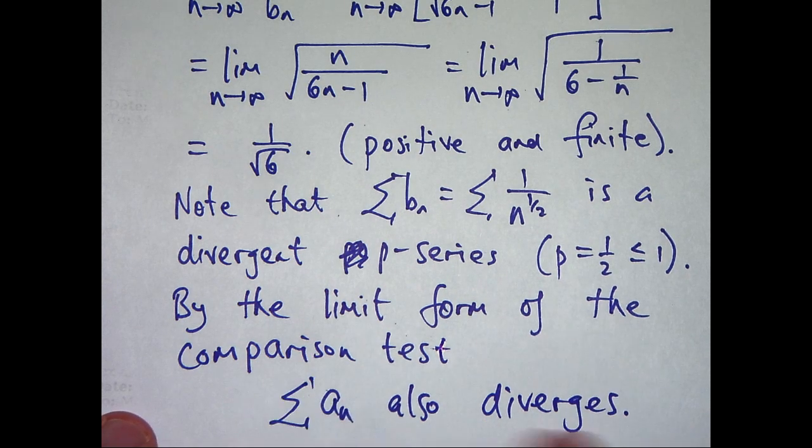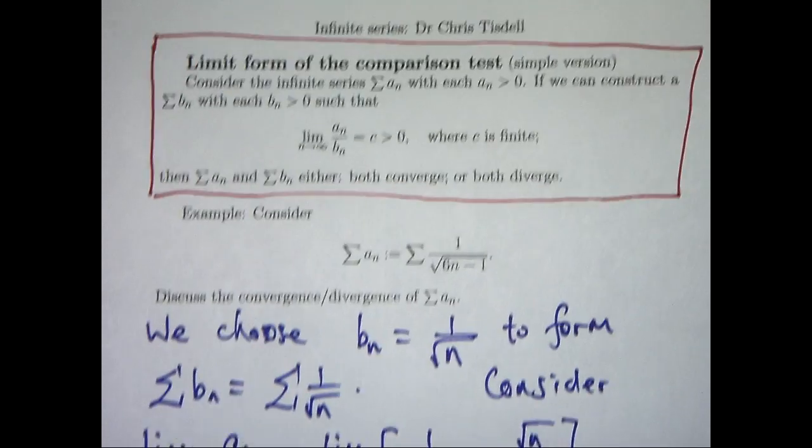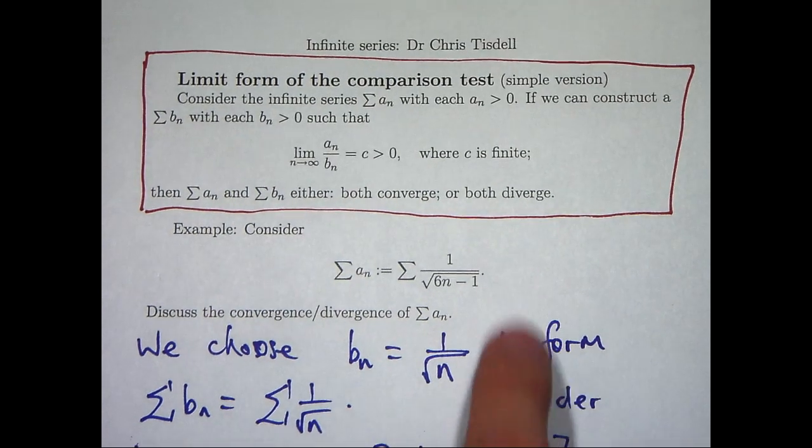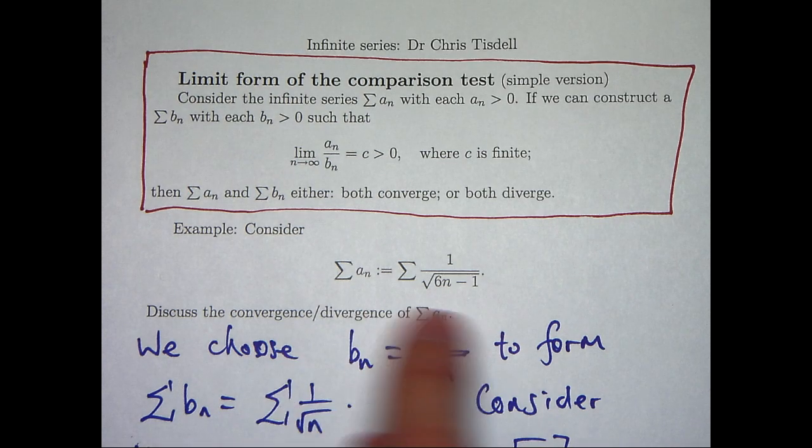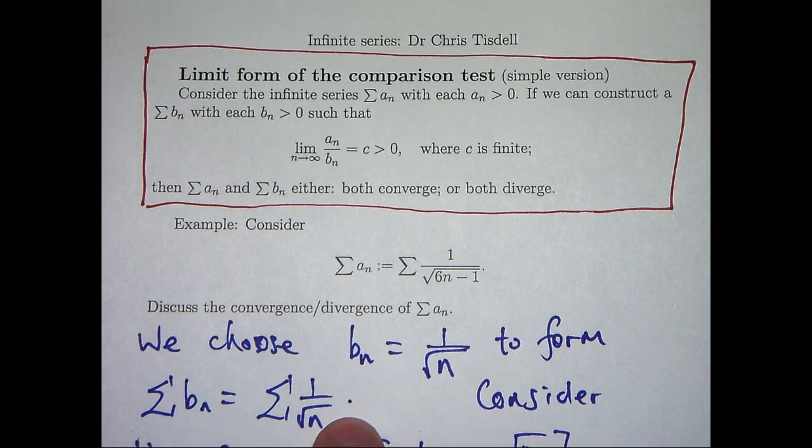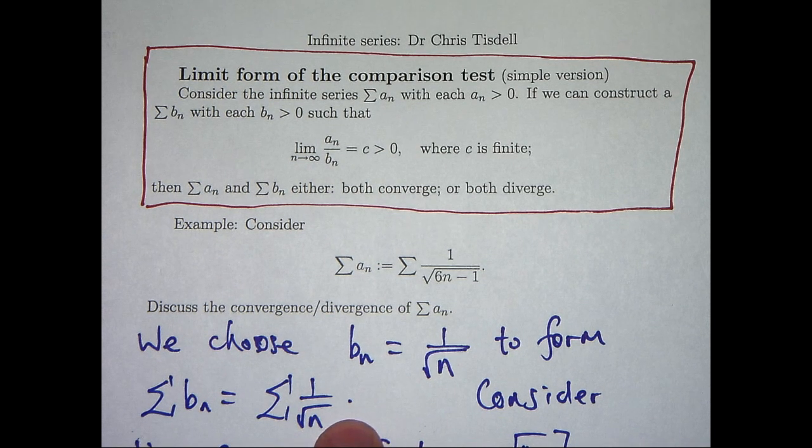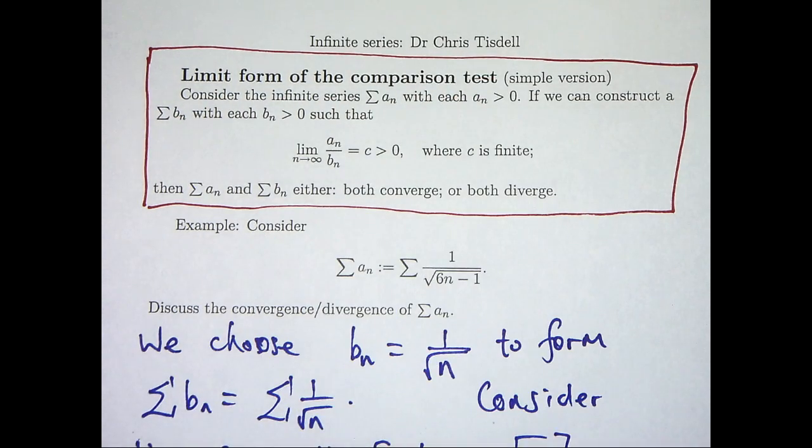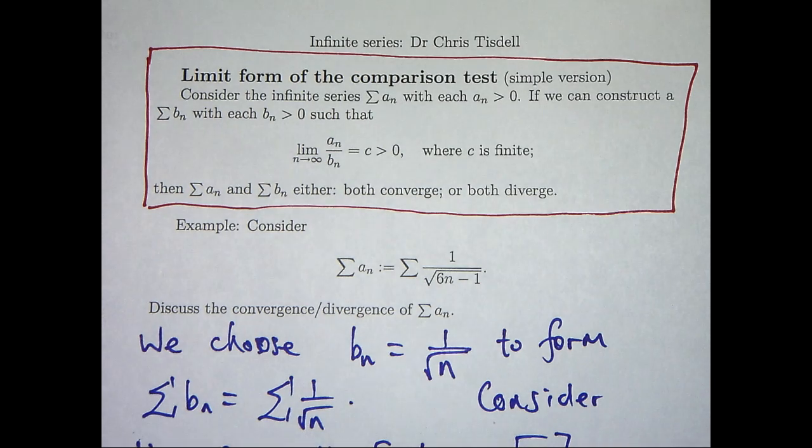So, we've named our tests, we've made our conclusion and one thing to remember here is that try to choose your new series to be some sort of p-series. That's the easiest choice. It won't always work, but in many cases it will. The big advantage of the limit form of the comparison test is that you don't need to fiddle around with inequalities like you do with the regular comparison test. It's very powerful and enjoy using it.